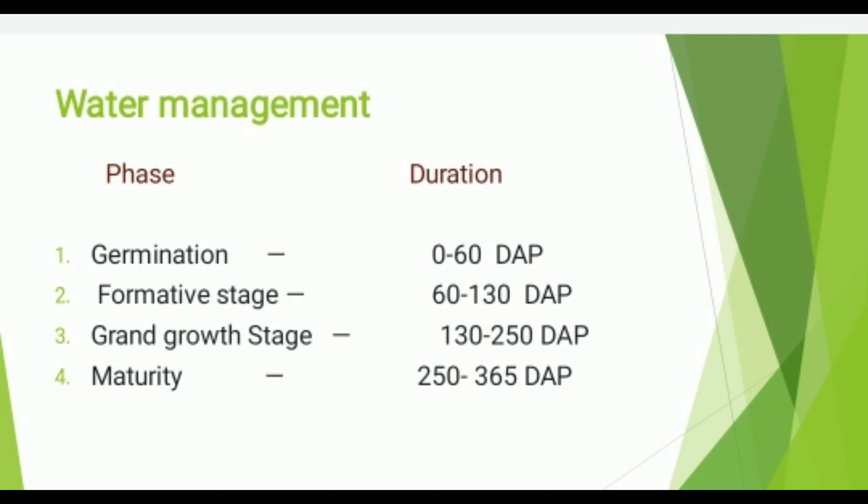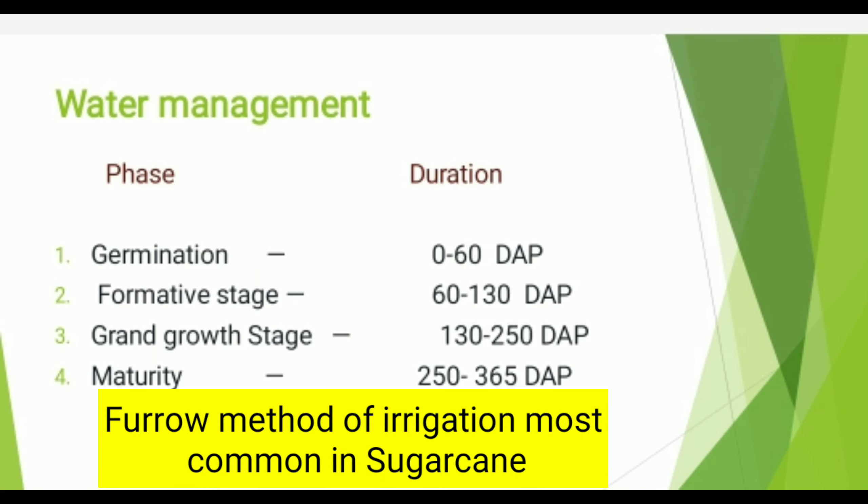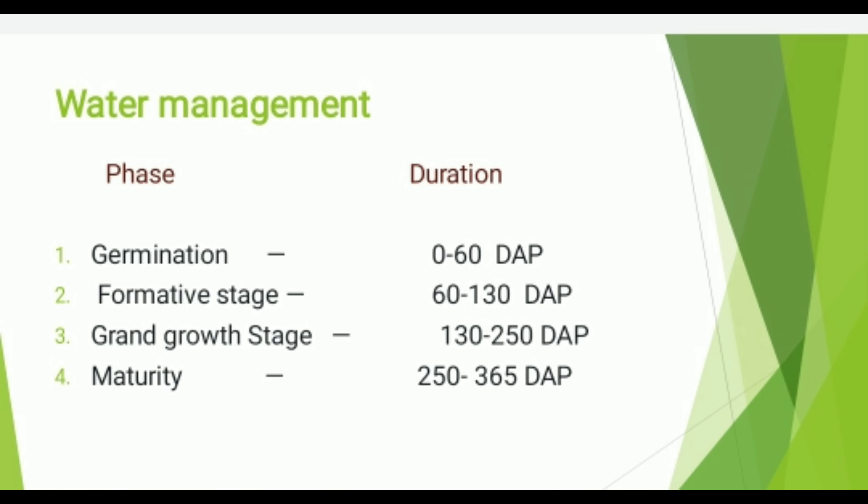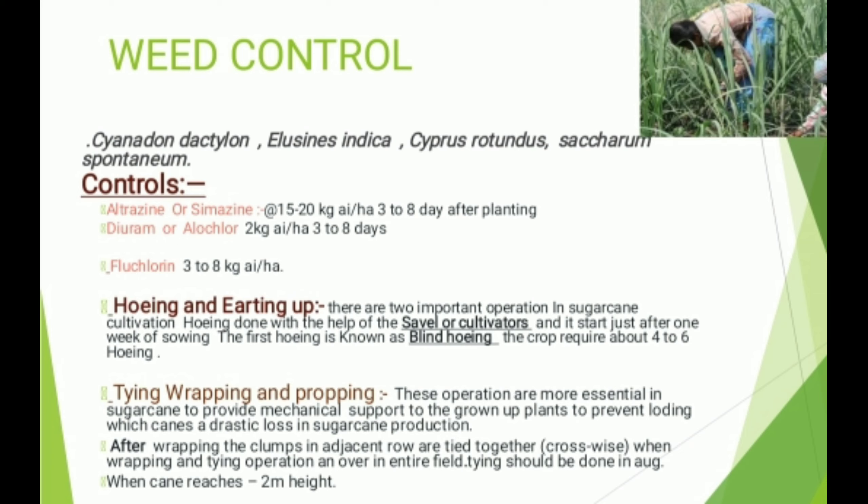Weeds of Sugarcane: Cynodon dactylon, Cyperus rotundus, Eleusine indica, and Saccharum spontaneum are the main weeds of sugarcane. Weed Control: Atrazine or dimazine at the rate of 1.5 to 2.0 kg per hectare, and Dursban at 2 kg per hectare, applied 3 to 8 days after planting. Hoeing and earthing up are the two main operations in sugarcane cultivation. Hoeing is done with the help of a spade or cultivator and starts just after one week of sowing. The first hoeing is also known as blind hoeing. The crop requires about 4 to 6 hoeings.